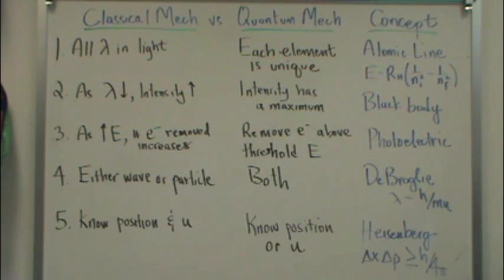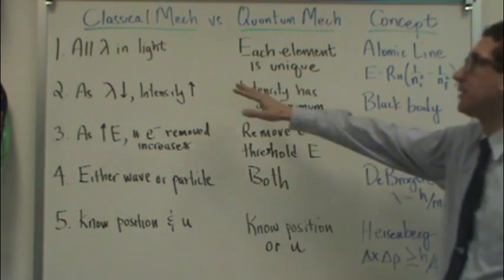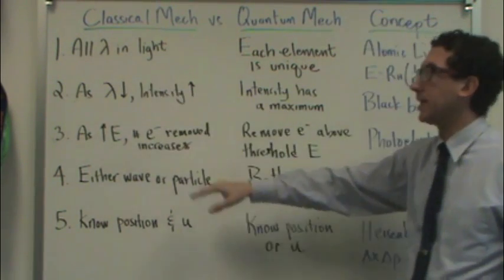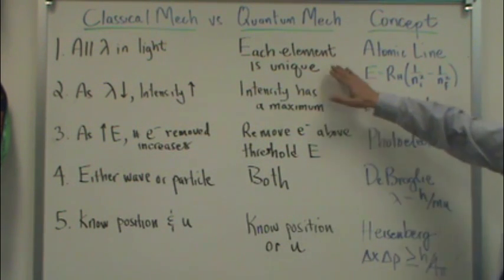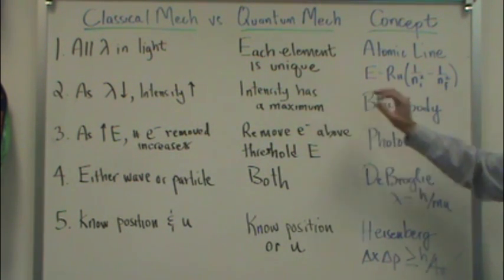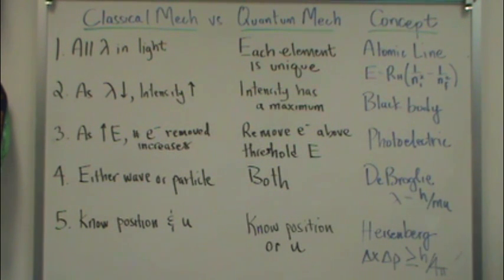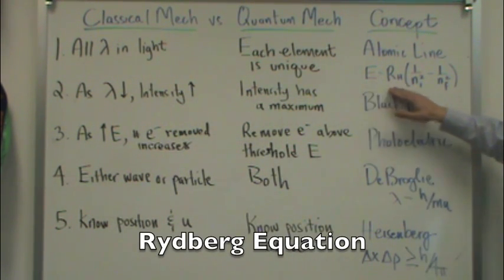So first is atomic line spectra. Classically, we used to think that all wavelengths, lambda, was available in light. So light carried all wavelengths. However, according to some atomic line spectra experiments, we find that each element is unique. And each element has certain wavelengths of light available in it, but not every wavelength. And in my class, we use this equation, which I call the Rydberg equation, to calculate that energy. And you'll see us use that in class.